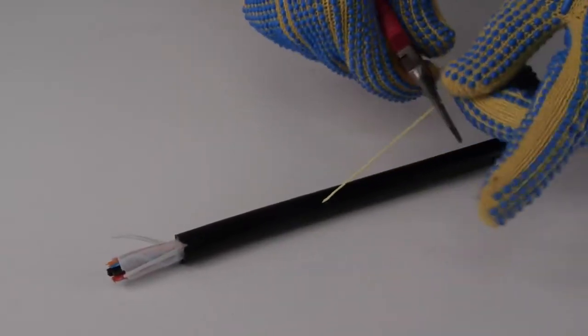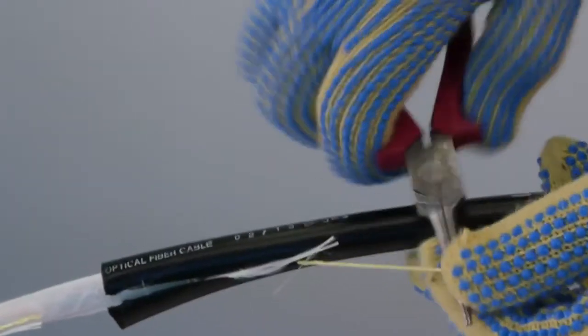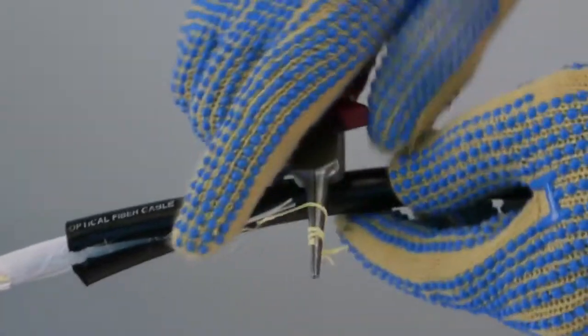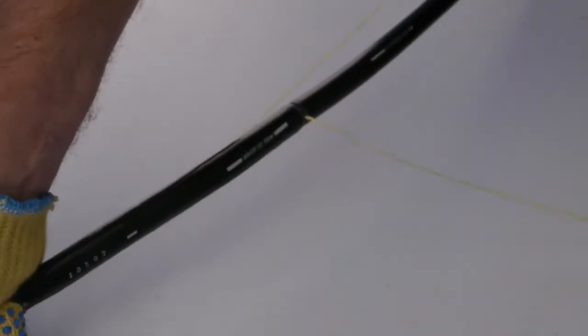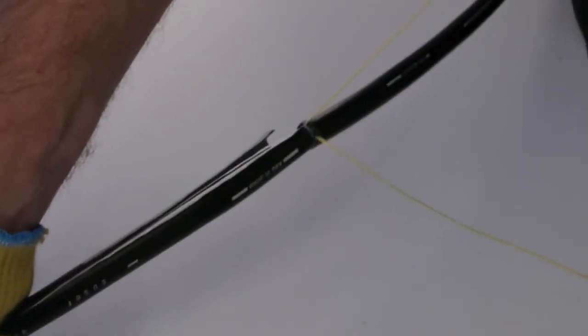After about an inch or so, unravel the cord and re-wrap it to form a T-handle on the pliers as shown. Pull the rip cord down the length of the cable to the ring cut created.